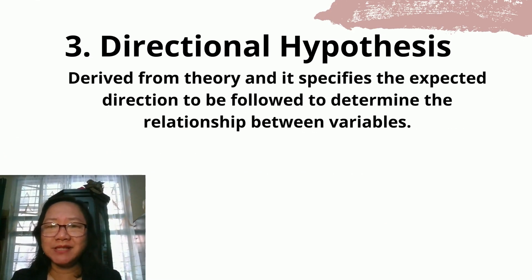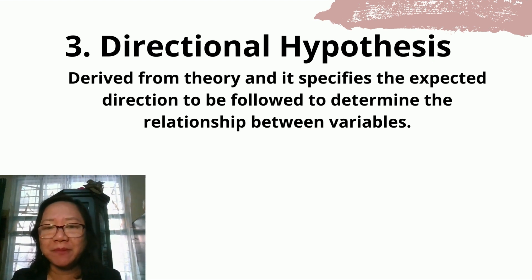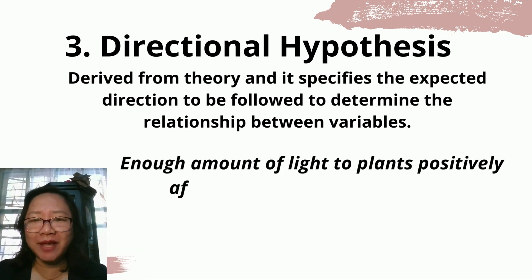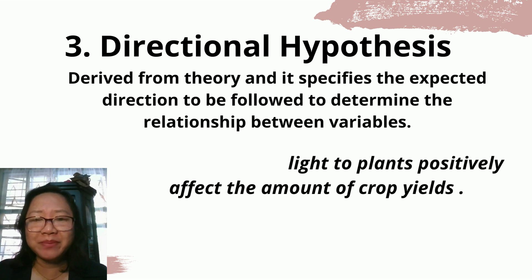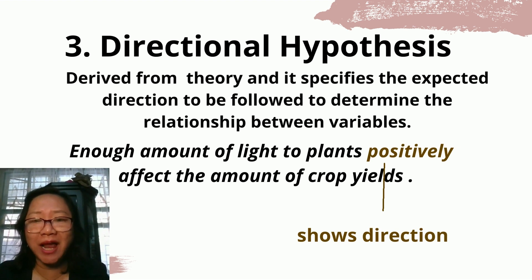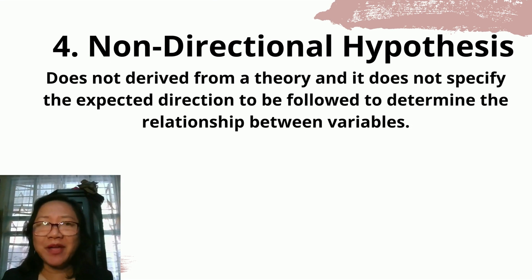The third type is directional hypothesis. It is derived from theory and specifies the expected direction of the relationship between variables. Example: enough amount of light to plants positively affects the amount of crop yields. The word 'positively' shows direction — that the amount of light will increase crop yields. Hence, this is a directional hypothesis.